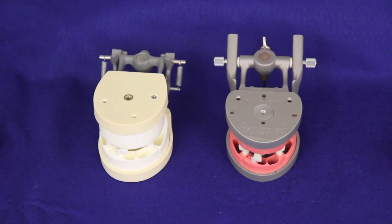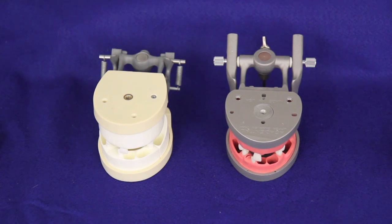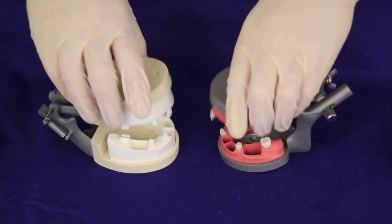These typodonts are purpose-made for the REB licensing exam. They can also be used for simulation exercises. Although they look quite different, they function in very much the same manner and are largely equivalent.